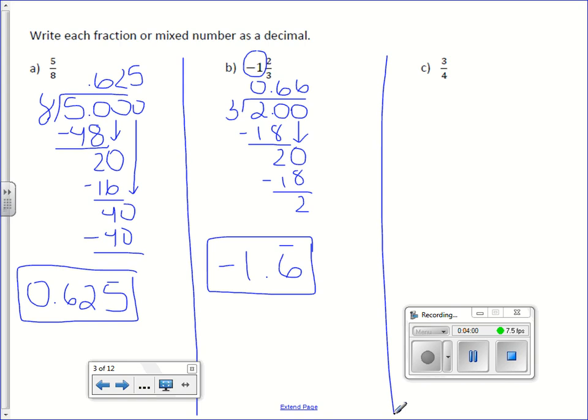Letter C, 3/4. Some of you may know this decimal off the top of your head, but just in case you don't, let's do the division. 4 into 3, 0. 4 into 30 would be 7 times. Minus 28 is 2. Bring down the 0. 4 into 20, 5 times exactly. So this is 0.75 or 75 hundredths.